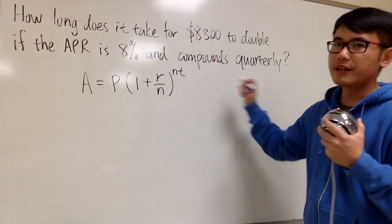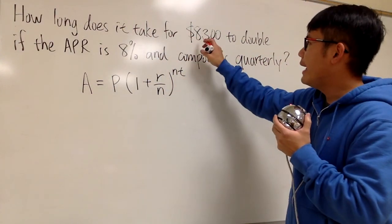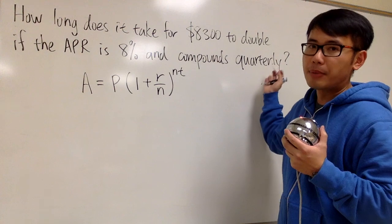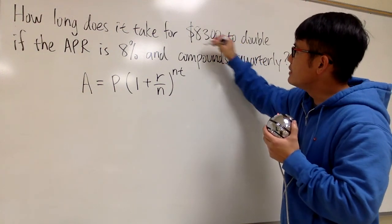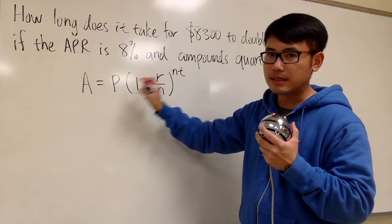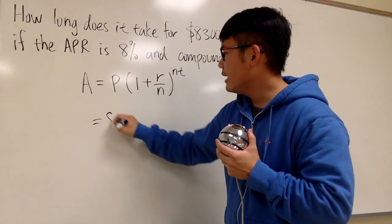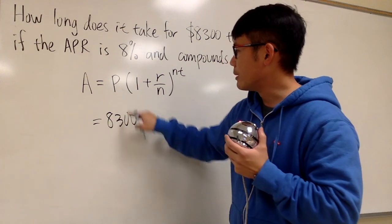Now let's go back to the question again. First of all, it says how long does it take for $8,300 to be doubled. Well, this is how much money we have at the moment. That is the principal. That's the P, the initial amount. So we can write this down right here, $8,300 for the P.